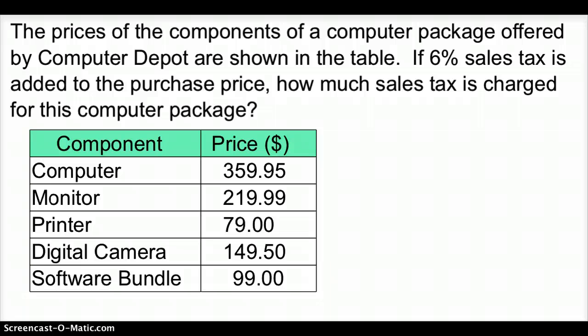Now we have a word problem with the table, so let's take a peek, let's see what it says. The prices of the components of a computer package offered by Computer Depot are shown at the table, or in the table. If 6% sales tax is added to the purchase price, how much sales tax is charged for the computer package? We can do this one of two ways. You can find 6% of each of these numbers, write it over here, and then add them all up to see 6% sales tax.